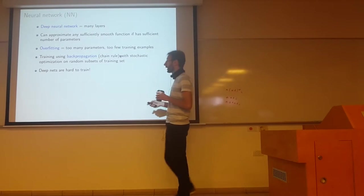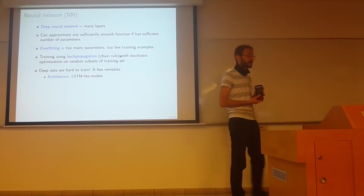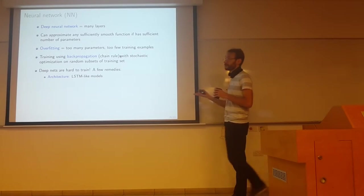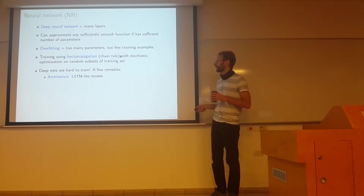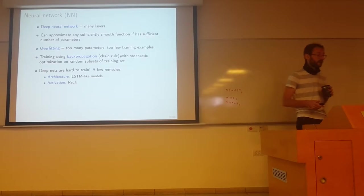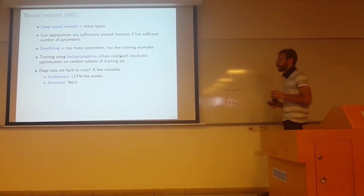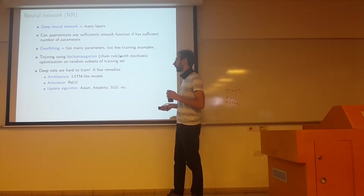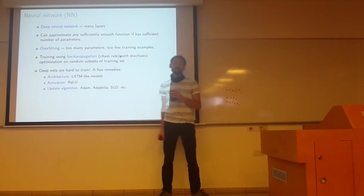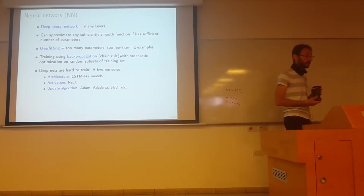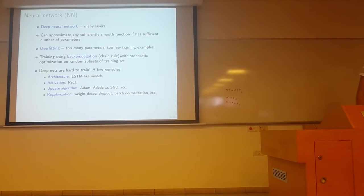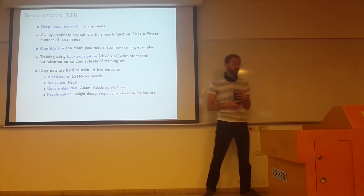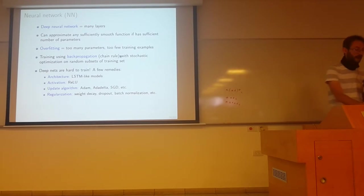In general, deep nets are quite hard to train. There are many remedies - architectural remedies, for example LSTM long short-term memory models used in recurrent networks, especially for speech recognition or text analysis. They solve the problem of vanishing gradients. The activation ReLU is easy to differentiate - it's a linear function, maybe non-smooth at some points, but at most points it behaves like a linear function. There are many very efficient stochastic optimization methods currently used, and different ways of regularization like weight decay, dropout, batch normalization, etc., that turn out to be extremely efficient in training very deep neural networks.